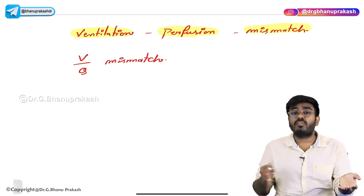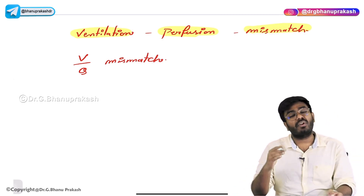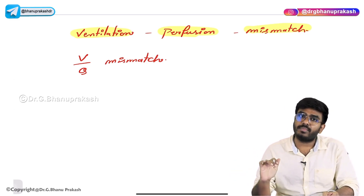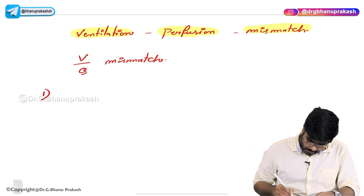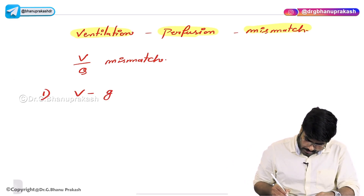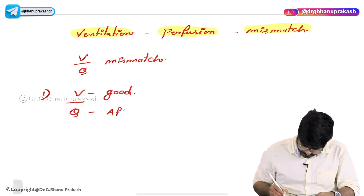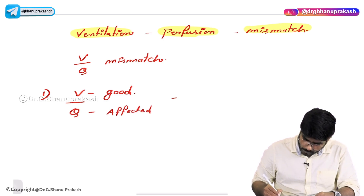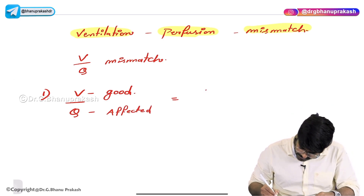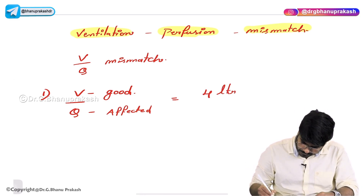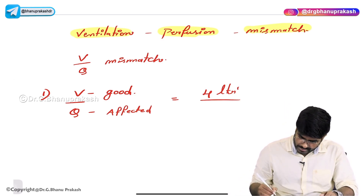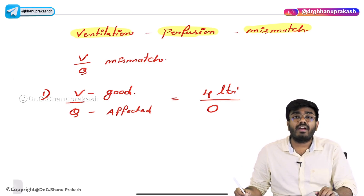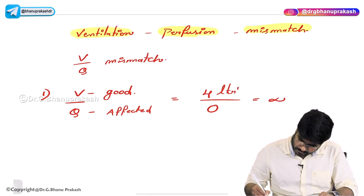First, let's take a scenario where ventilation is absolutely good but perfusion is affected. Normal ventilation is four liters and normal perfusion is five liters. In this example, let's take perfusion as zero. So four divided by zero is infinity.